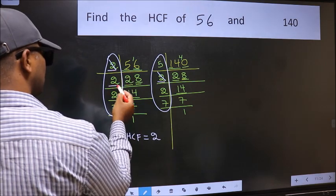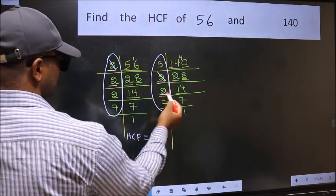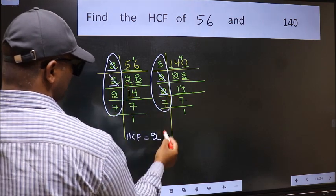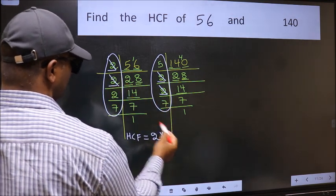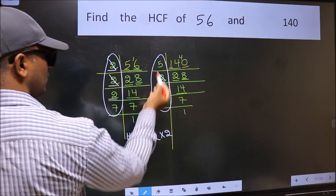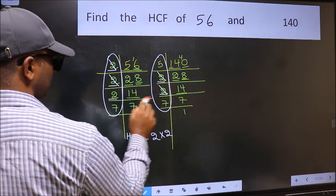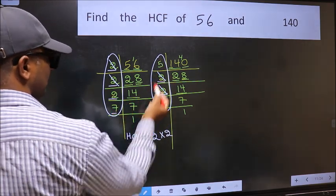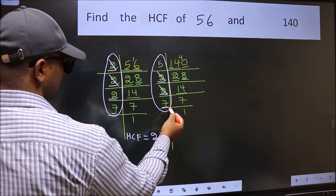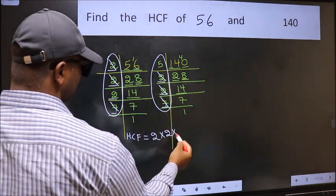Next number 2. Do we have 2 here? No. Next number 7. Do we have 7 here? Yes. So cut 7 right here.